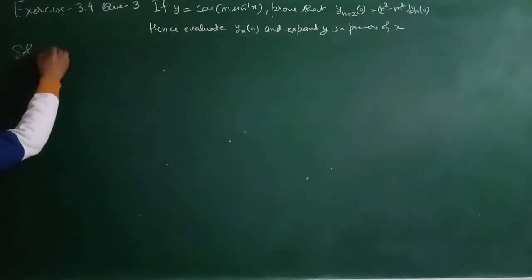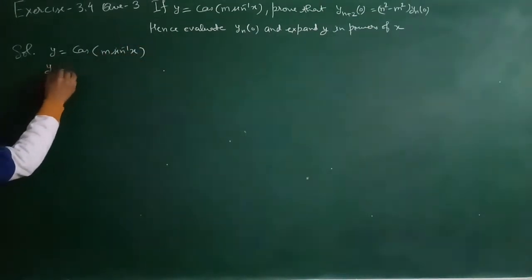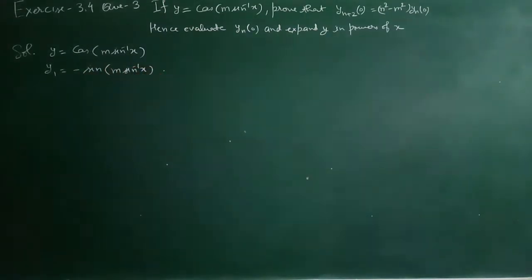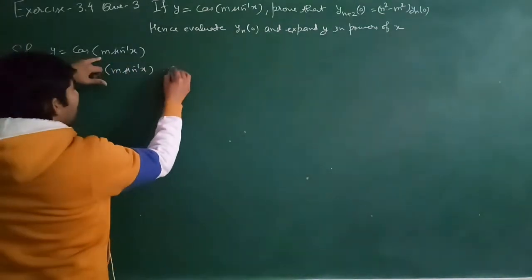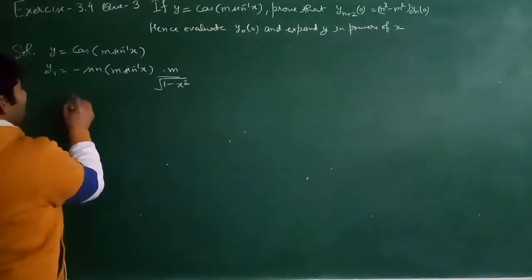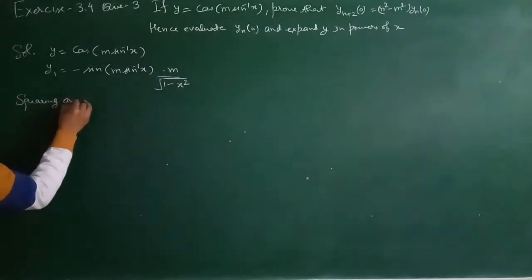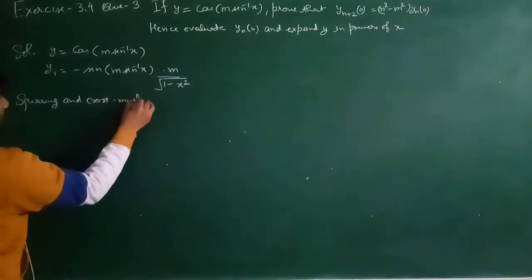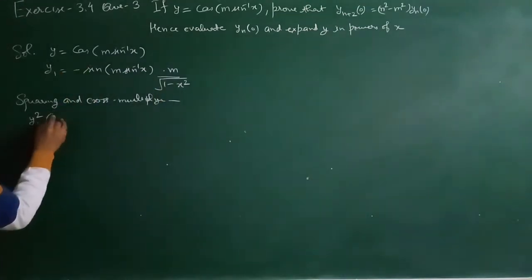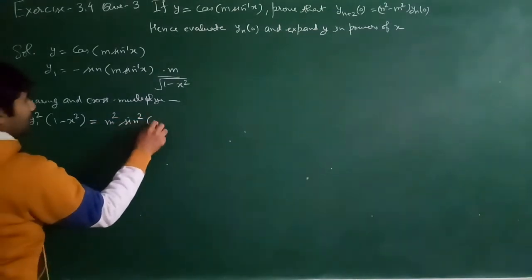Solution: y is equal to cos(m·sin⁻¹x). Differentiating, y1 = -sin(m·sin⁻¹x) · m / √(1-x²).